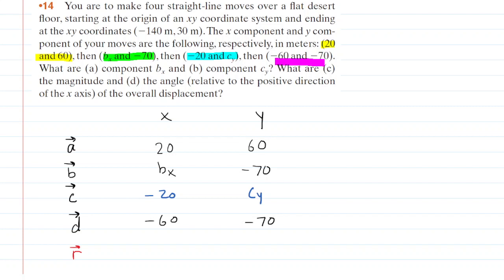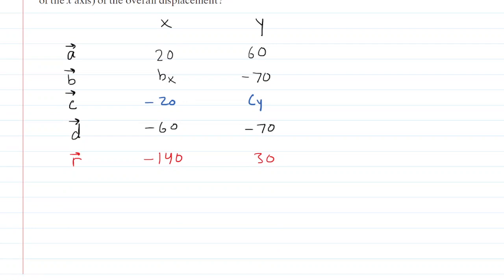Now, the question notes that we start out at the origin and then we end at the following coordinates. So those turn out to be the components of the resultant vector. We can fill those into our table: negative 140 and then 30. What's nice about using the table is it helps us keep things organized. We know that the sum of the x components, those four x components, must equal the resultant x component.